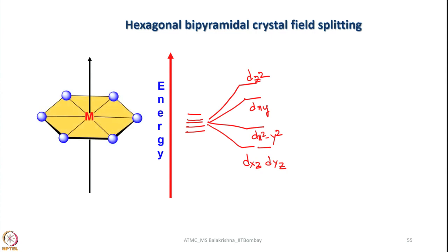Hope you have understood how to write in a simple way Cartesian coordinates and then putting the geometry at the center and then try to place the ligands to understand their influence and writing the appropriate crystal field splitting diagrams.